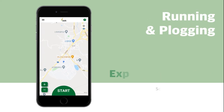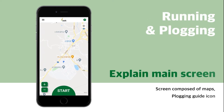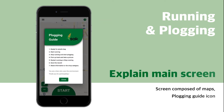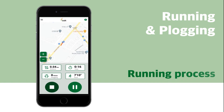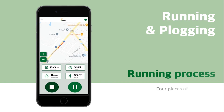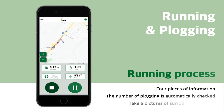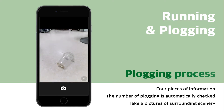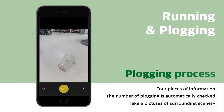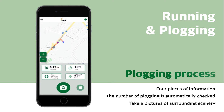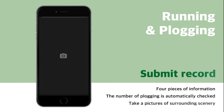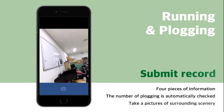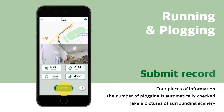On the main screen, it starts with a screen composed of maps, and if you click on the top right, you will see the plogging guide. When you start running, you will see a screen consisting of four pieces of information. If you stop running, the plogging start button appears. If you take a picture of the trash while plogging, the number of plogging is automatically checked.